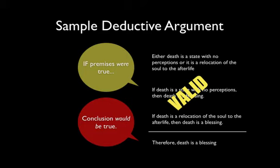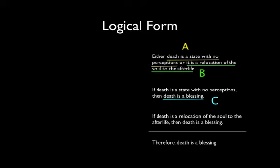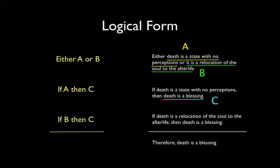Arguments that are deductively valid exhibit correct reasoning because of their logical form. To display the form of an argument, we replace sentences in the argument with letters like this. Let A represent 'death is a state without perceptions.' Let B represent 'death is a relocation of the soul to an afterlife.' And let C represent 'death is a blessing.' We can now see that Socrates' argument has this form: Either A or B; if A, then C; if B, then C; therefore C.